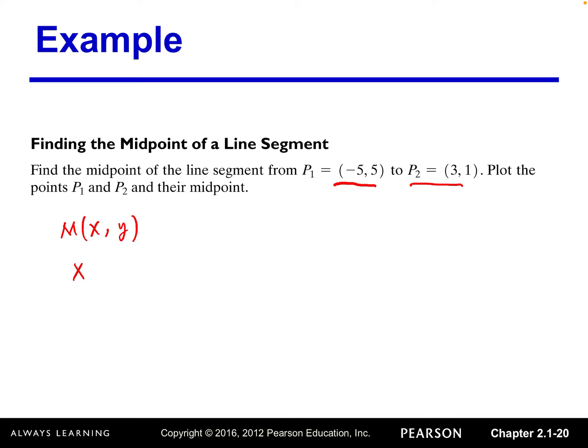And then the X coordinate of the midpoint equals half of the two endpoints X coordinates. That's negative 5 plus 3.